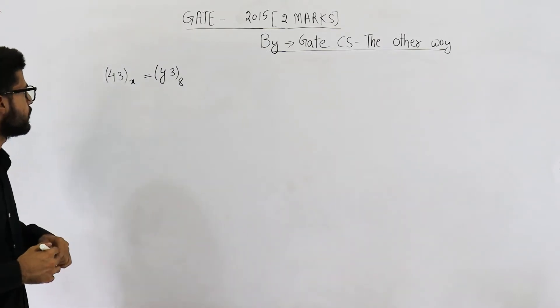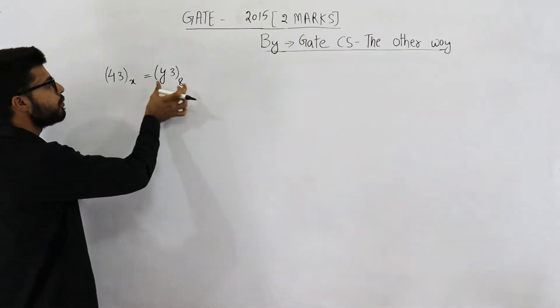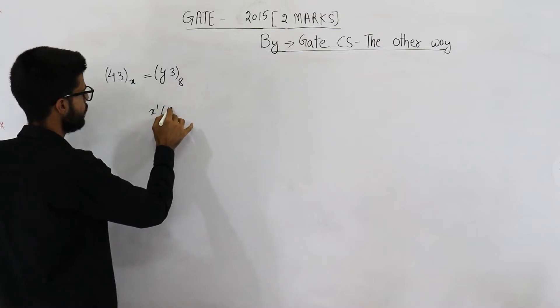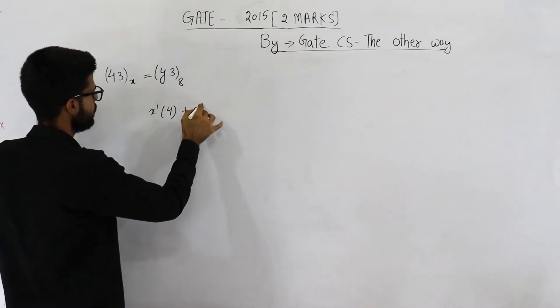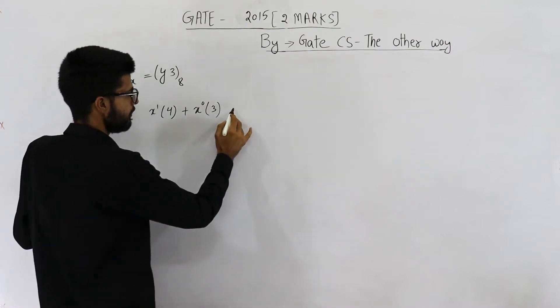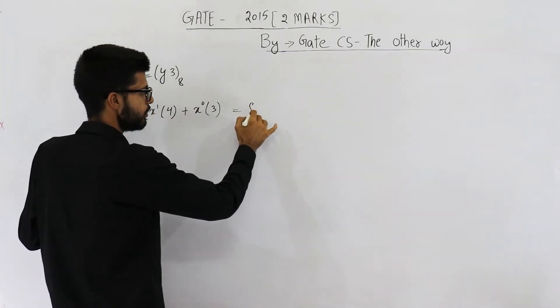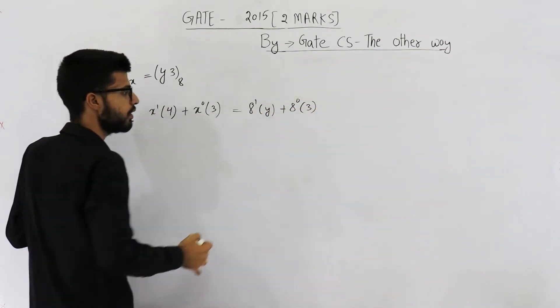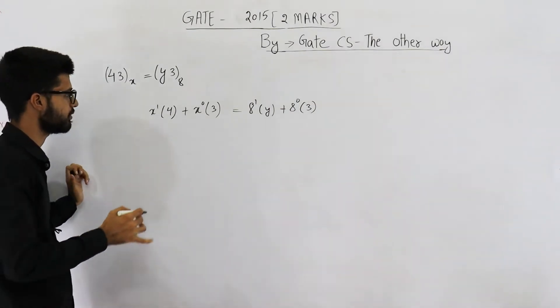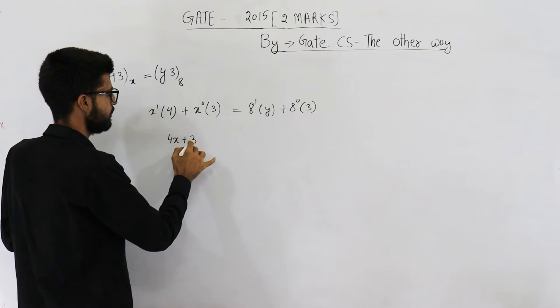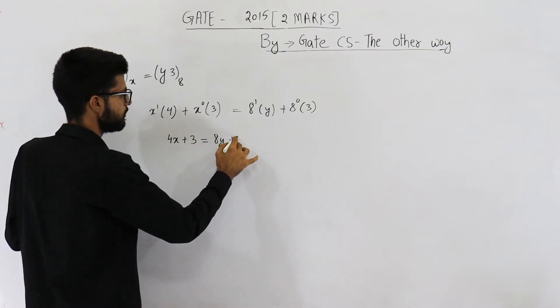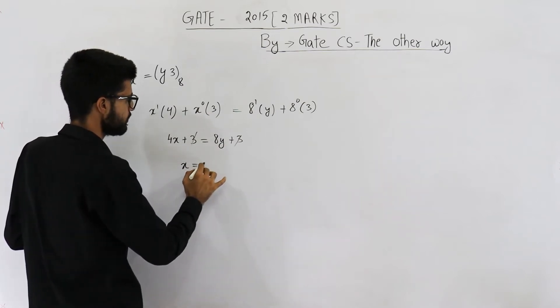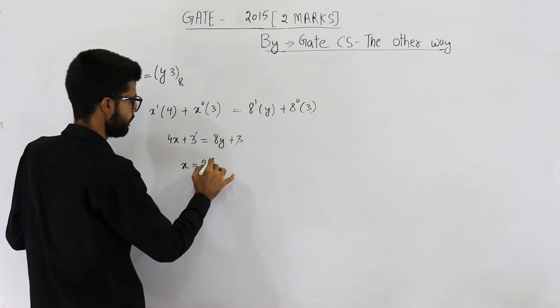Let us analyze this equation. Step 1 is you convert both of these numbers in decimal number system. So this is x raised to the power 1 into 4 plus x raised to the power 0 into 3. This is equal to 8 raised to the power 1 into y plus 8 raised to the power 0 into 3. So I have converted both of these numbers into decimal number system. This is 4x plus 3 is equal to 8y plus 3. So you can see the relation between x and y is x is equal to 2y.